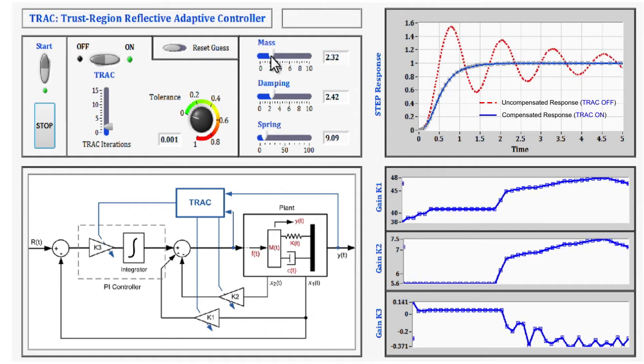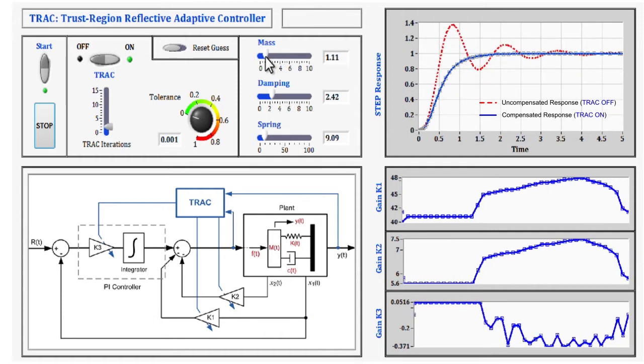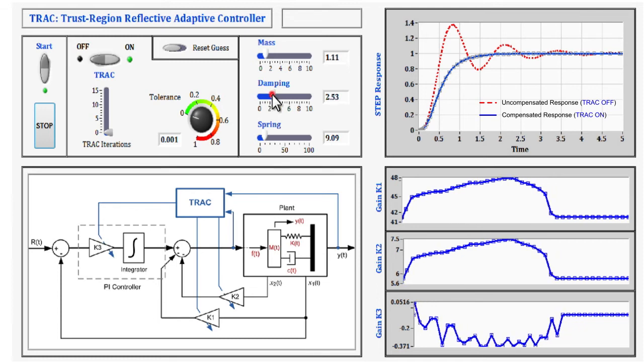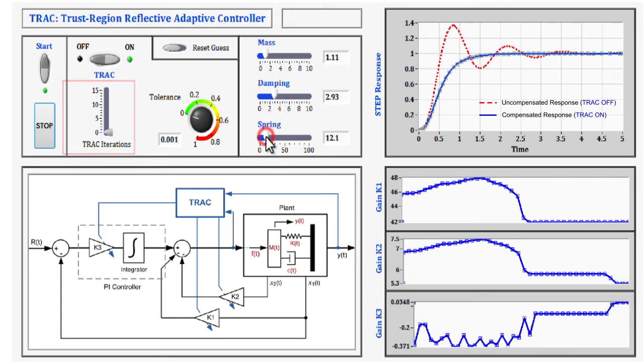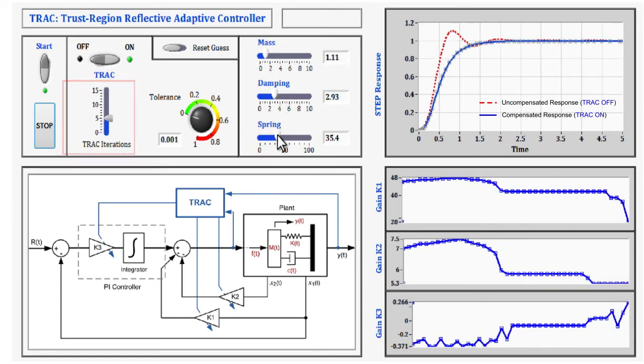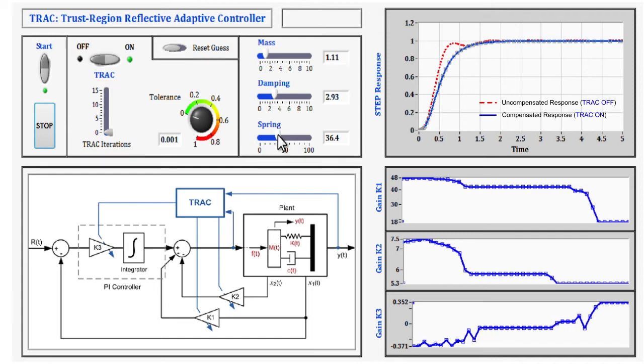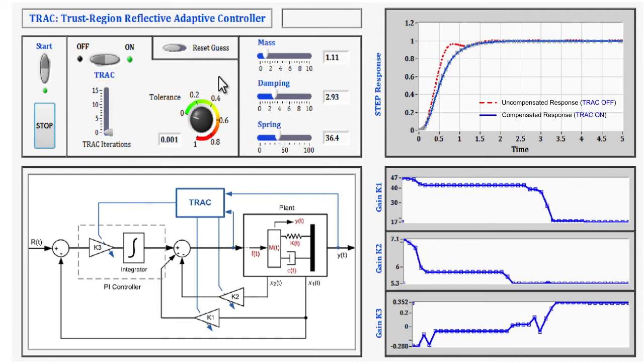A last point to note about TRAC is the number of iterations that the algorithm performs in the background, which is visualized by this slider. This number is a direct function of the amount of disturbance that is allowed to leak toward the compensated output.